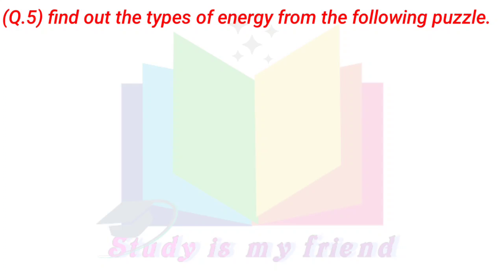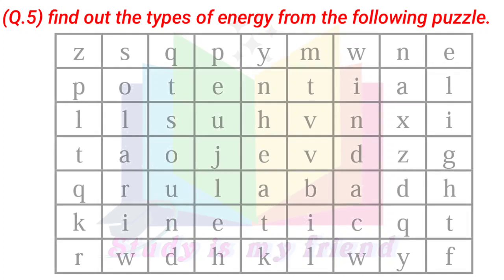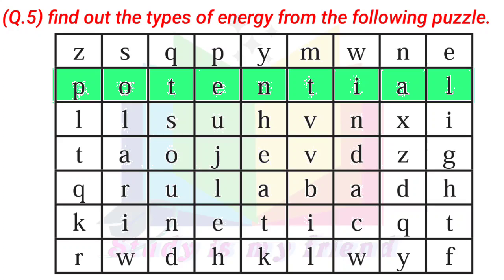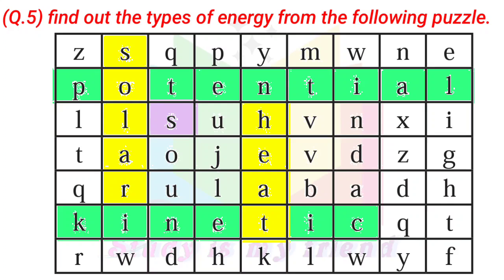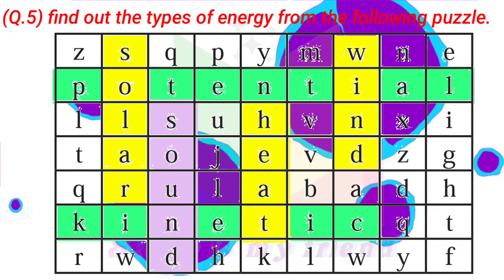Question 5: Find out the types of energy from the following puzzle. Answer: Potential, kinetic, solar, heat, sound, wind.